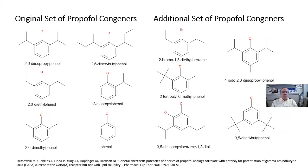This is the set of 11 propofol congeners that were docked into the GABA receptor structural model in the anesthetic binding site. The original set was from our previous publications, with an additional five now available for incorporation.